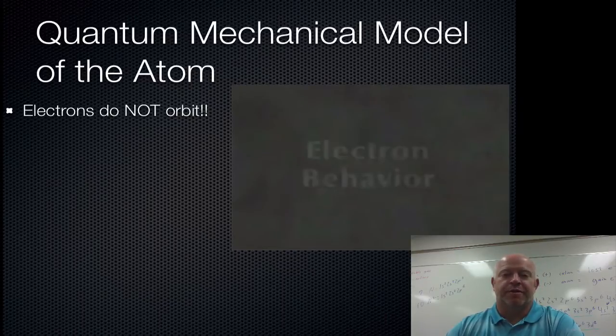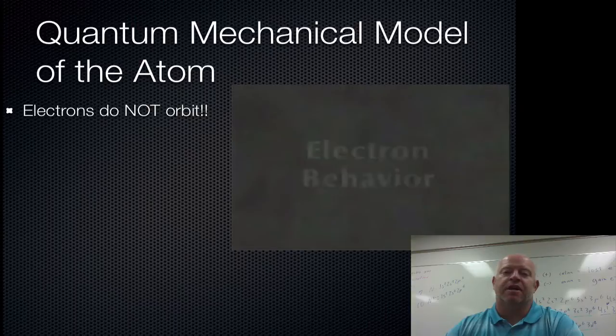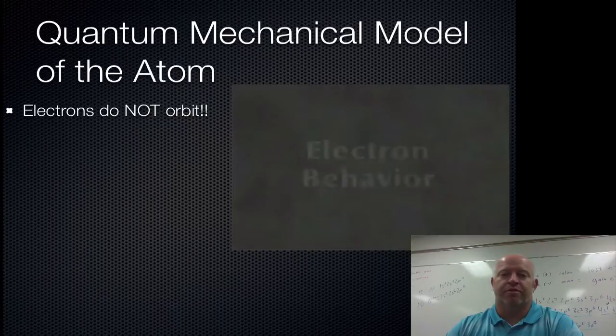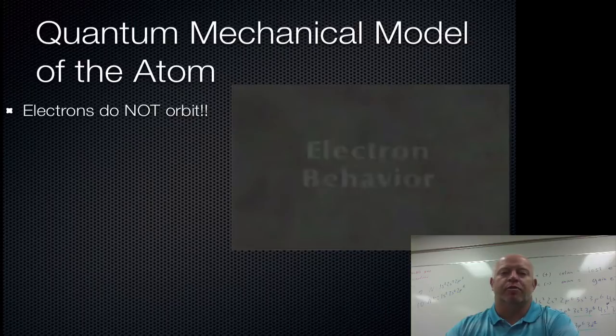So first thing, in the quantum mechanical model, one of the biggest things that is different from the planetary model is that electrons are not in an orbit. Okay, so we now believe the electrons do not move around the nucleus in a nice orbital pattern.